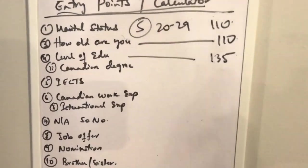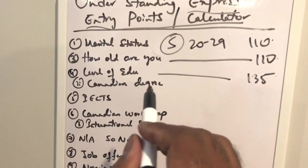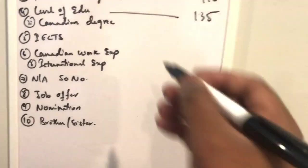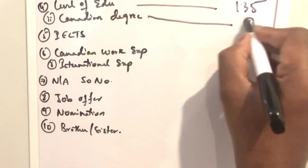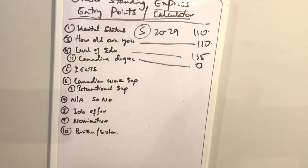Third question, fourth question, if you are in Canada, then if you have a Canadian degree, it applies to you. Right now we are not in Canada, so that's a zero. Next, fifth, IELTS.